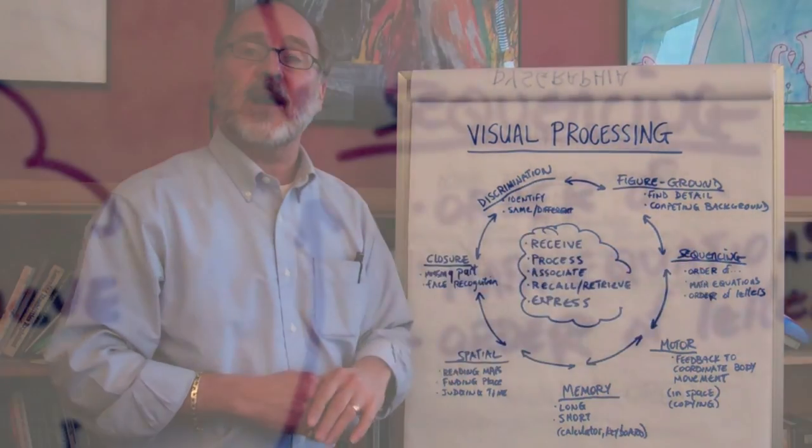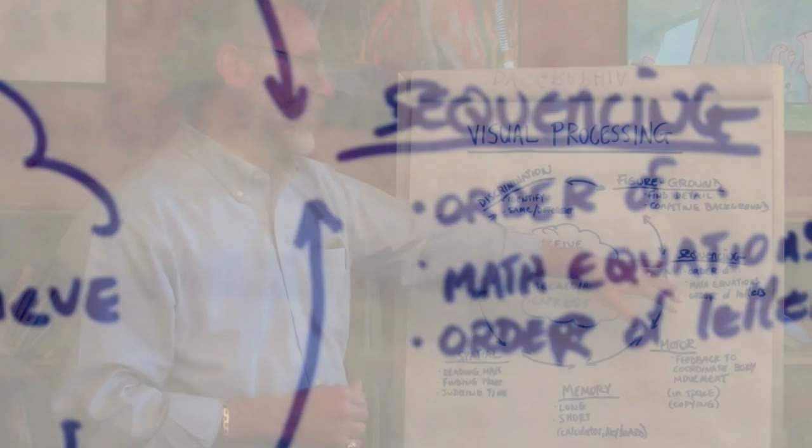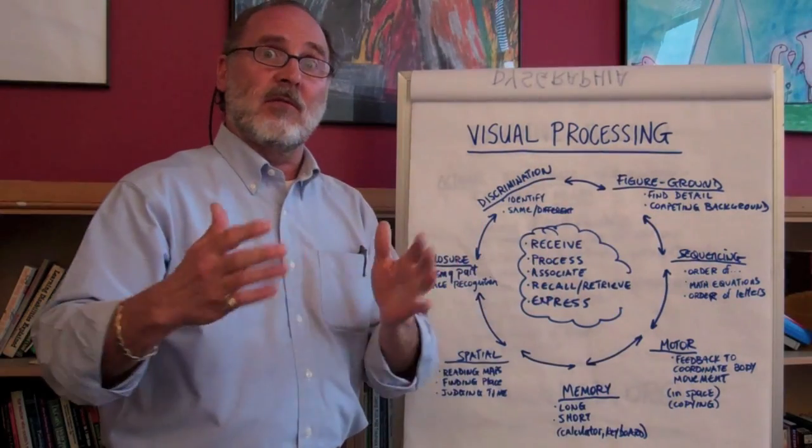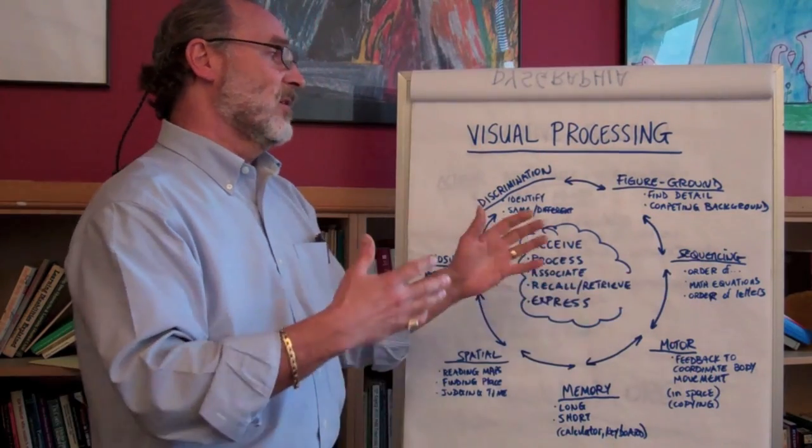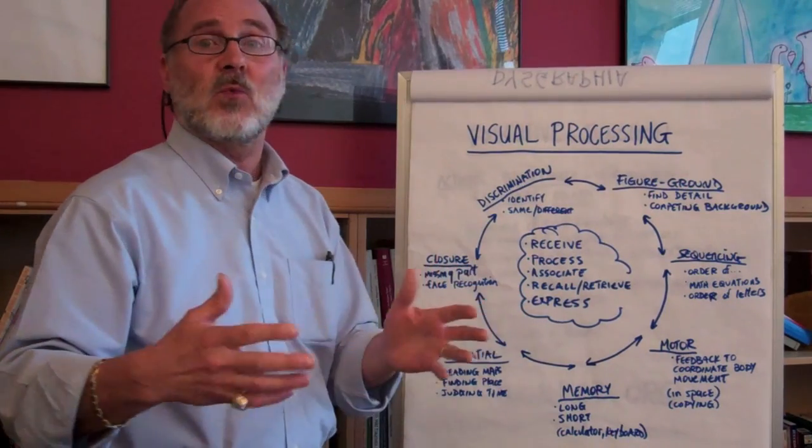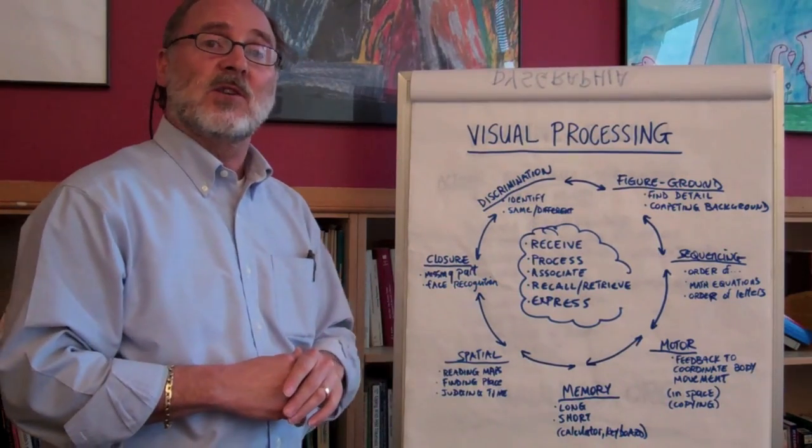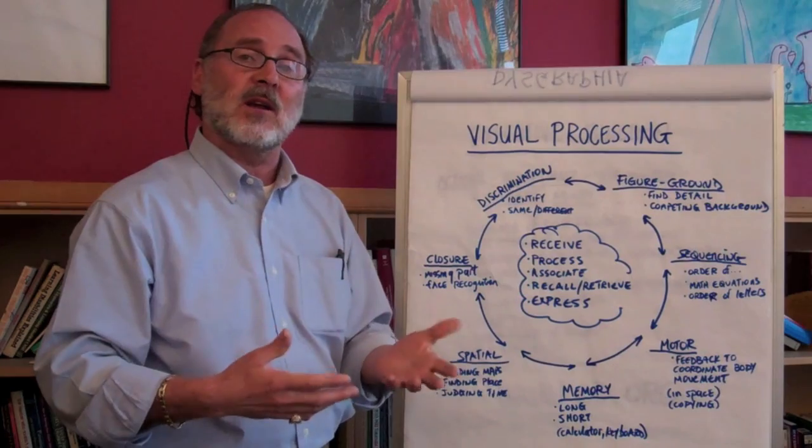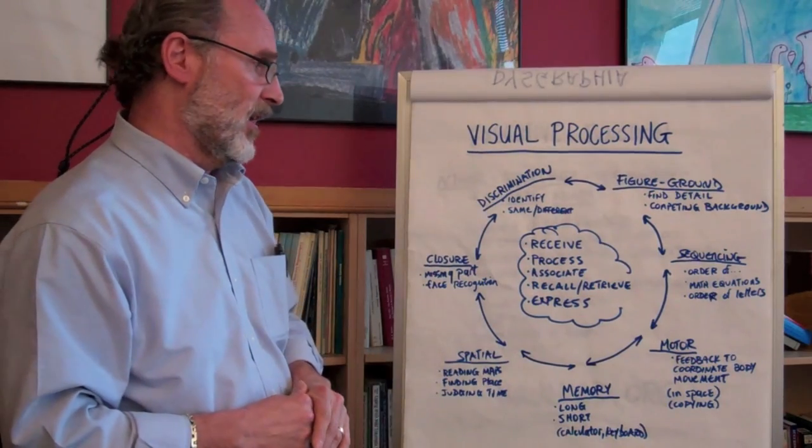Sequencing, another area of difficulty for students with learning disabilities who struggle in the visual processing area. For example, the order of things, how they appear. So, for example, in a math equation, there may be numbers in a sequence. There may be the order of letters and words. Those kinds of sequences are often very difficult to discern and to remember and to recognize by students with learning disabilities who struggle in this visual processing area.